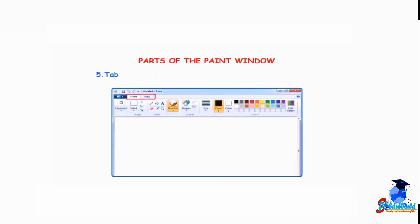Number 5: Tab. Each tab contains tools arranged in different groups. Number 6: Group. A group is a set of related commands.